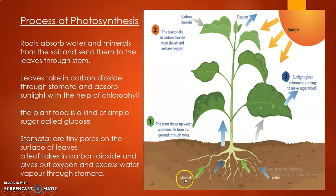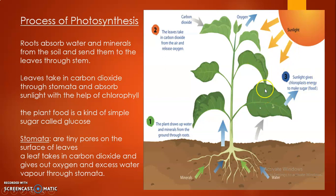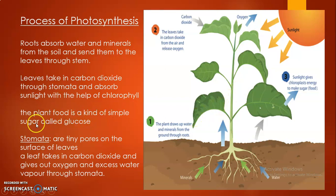The roots collect minerals and water from the soil, which are sent by the stem to the leaves. The leaves also collect sunlight from the sun and carbon dioxide from the air, and convert it into food for the plant. The plant food is a kind of simple sugar called glucose.